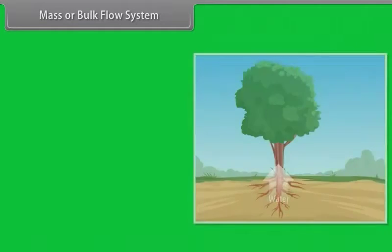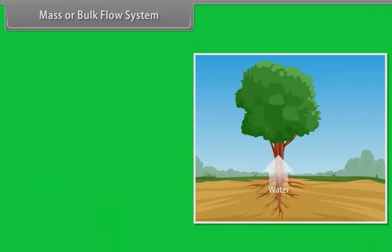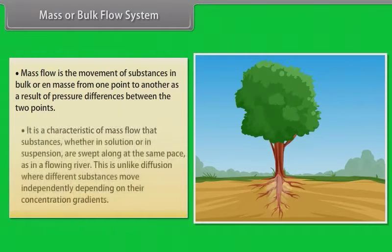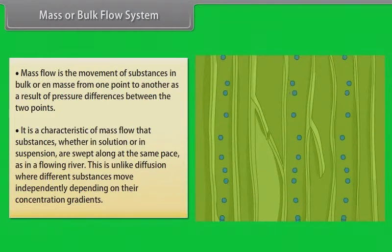Mass or bulk flow system. In long trees, special long distance transport systems become necessary so as to move substances across long distances and at a much faster rate. Water, minerals and food are generally moved by a mass or bulk flow system. Mass flow is the movement of substances in bulk or en masse from one point to another as a result of pressure differences between the two points.